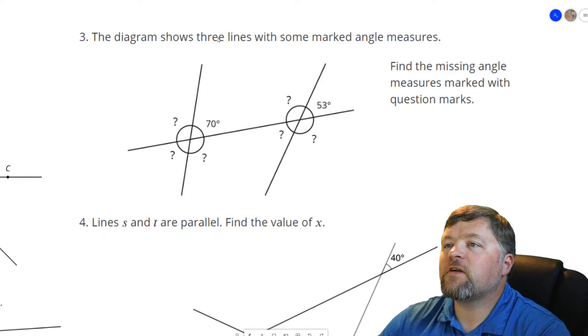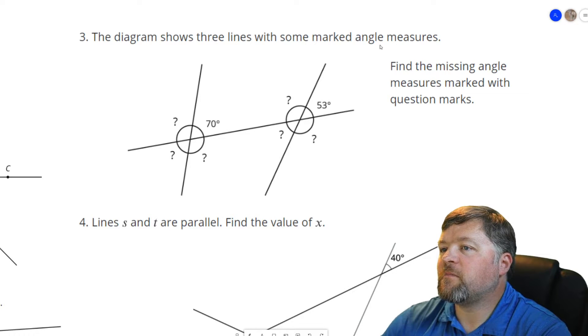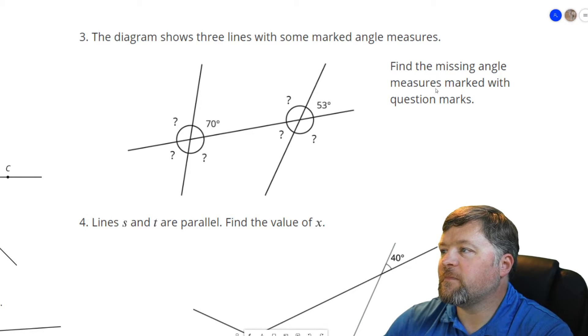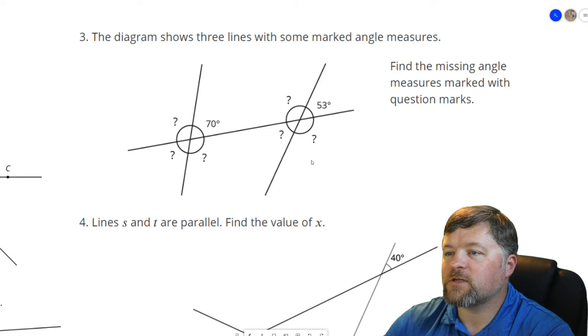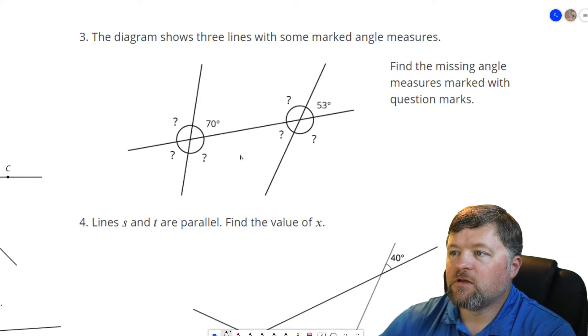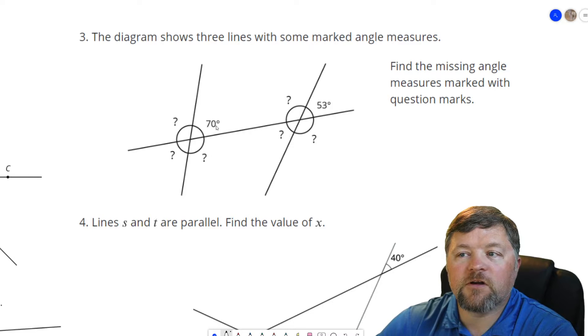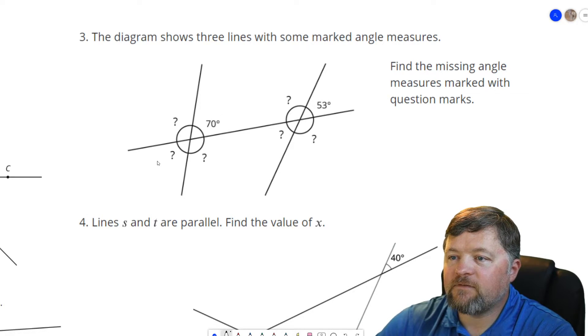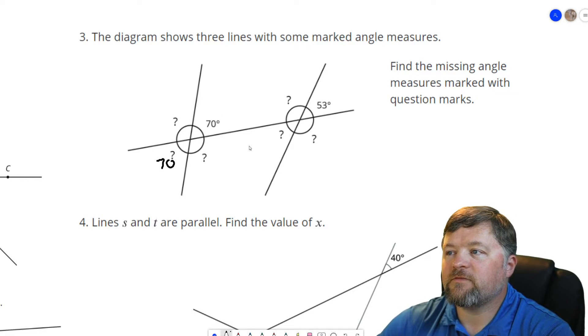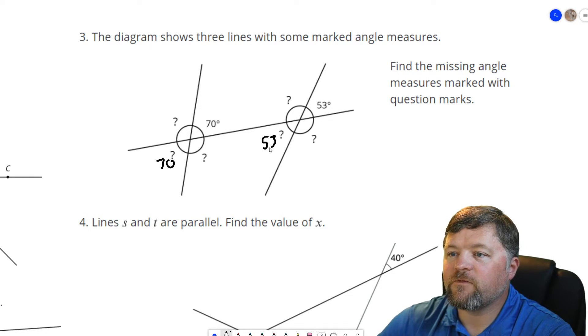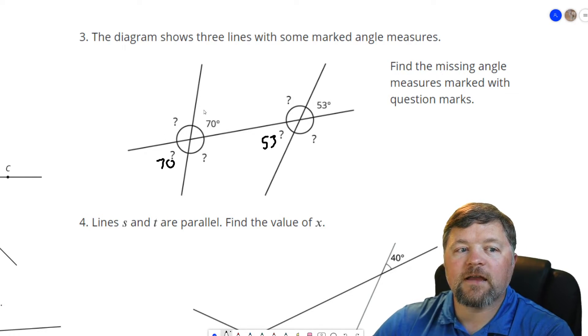The diagram shows three lines with some marked angle measurements. Find the missing angle measures marked with question marks. So the first ones to think about are where are vertical angles. If this is 70, that's also 70. If this is 53, that is also 53 because they're vertical angles.